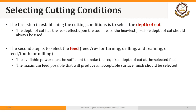The available power must be sufficient to make the required depth of cut at the selected feed. The maximum feed possible that will produce an acceptable surface finish should be selected. There are recommended values for feed and cutting speed that we will refer to in the following slides, and it is better to refer to those tables of recommended feed and speed to get the desired finish. The third step is to select the cutting speed.